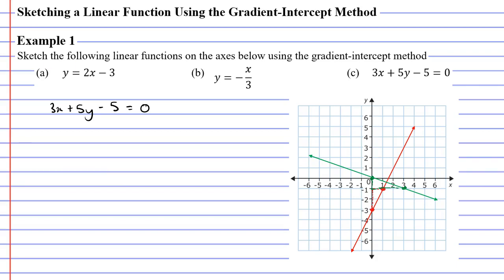The first thing I'm going to do is I'm going to subtract 3x on both sides of the equal sign. This will cancel the 3x on the left. This will give us 5y minus 5 equals negative 3x.